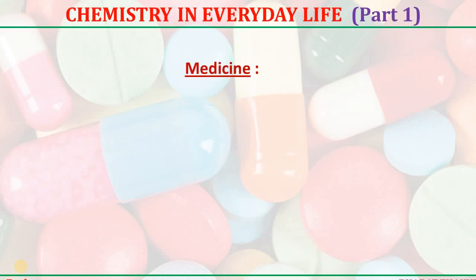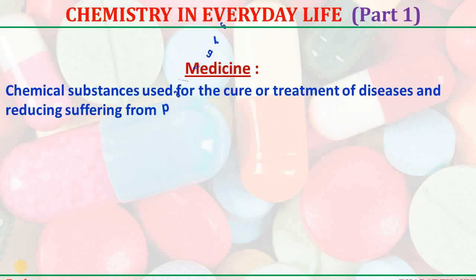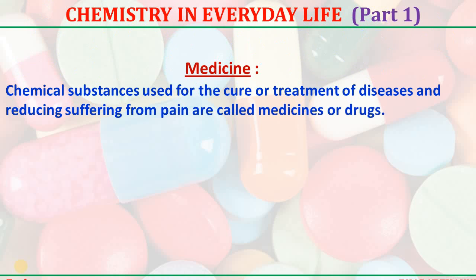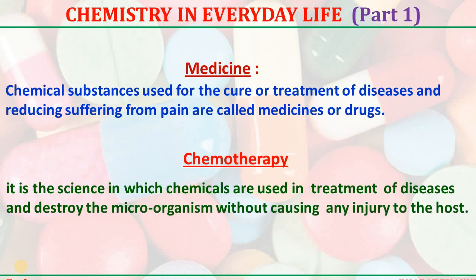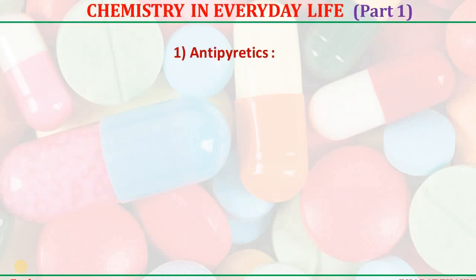It involves some important definitions of medicines and their examination. The chemical substances used for the cure or treatment of diseases and to reduce suffering from pain are called medicines or drugs. The science in which chemicals are used in the treatment of diseases and destroy the microorganisms without causing any injury to the host is called chemotherapy.